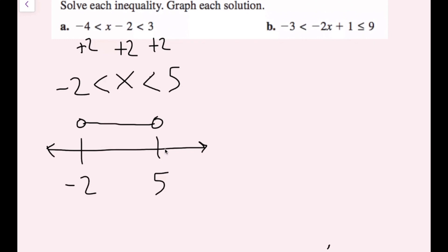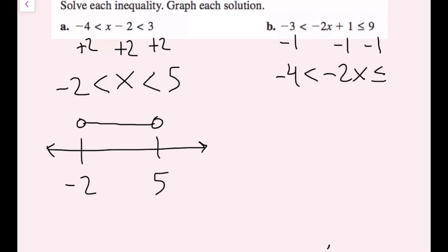For part B, I look at what's happening to x in the middle. There's a plus 1 term and a coefficient of negative 2. First, I cancel out the plus 1 by subtracting 1 from all sections. I get: -4 < -2x ≤ 8.